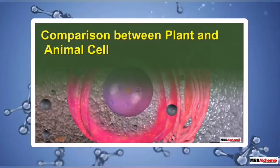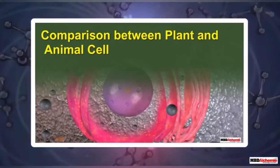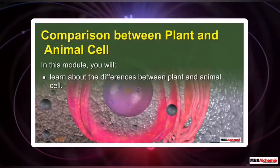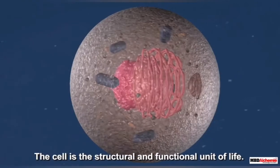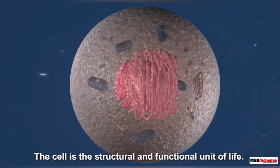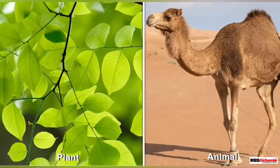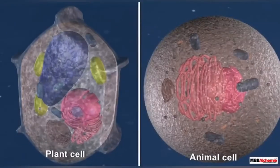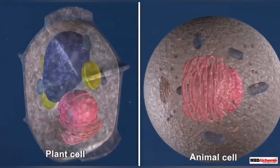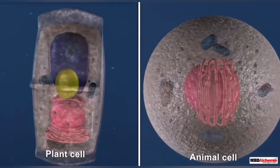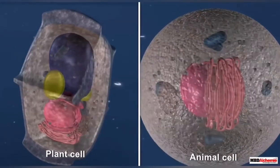Comparison between plant and animal cells. In this module, you will learn about the differences between plant and animal cells. The cell, as we already know, is the structural and functional unit of life. Both plants and animals are made of cells; however, a plant cell and an animal cell are different from each other. Let us look at them closely and compare them.